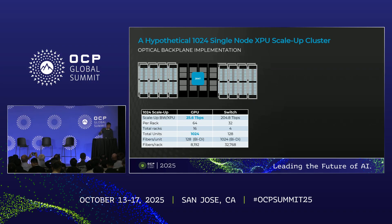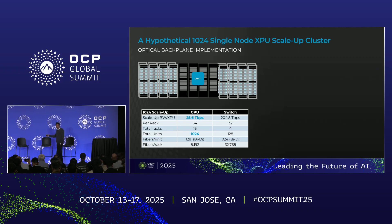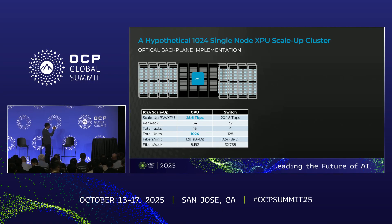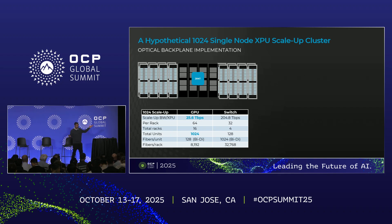So how would we do this? First we need a 200T switch. We have 25T on each GPU. And now you can see with optics, I can have 16 racks with 64 GPUs in there. I can have four racks of switches, 32 in each rack. And there you go — I have a 1024 single-domain scale-up.